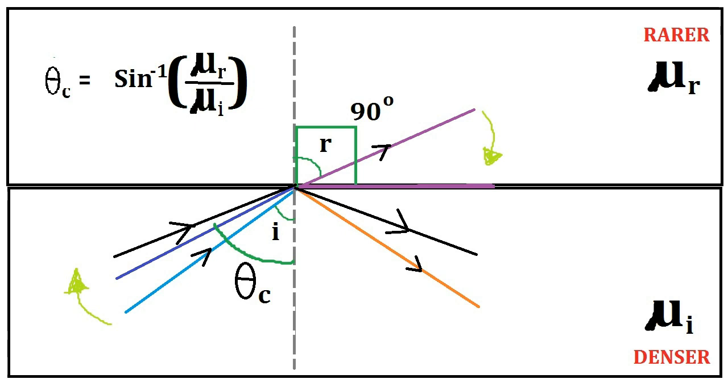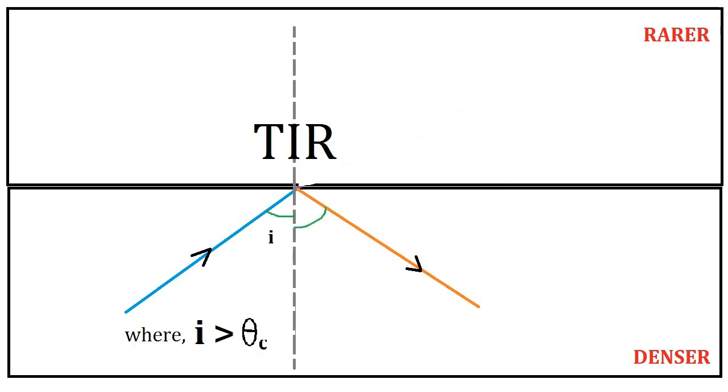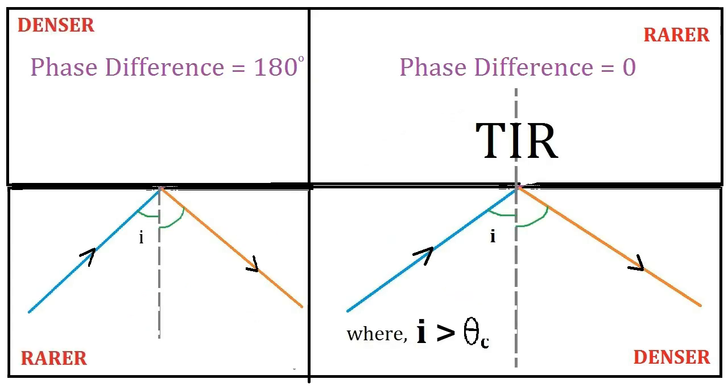There are some important things to consider about total internal reflection. Number one: total internal reflection always happens when light is passing from denser medium to rarer medium. Number two: there is no phase difference between the incident ray and reflected ray in total internal reflection. You may know that when light reflects from a denser medium, there is a phase difference of π. But since in TIR the reflection is from a rarer medium, there is no phase difference.